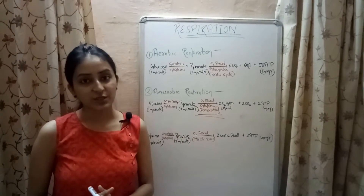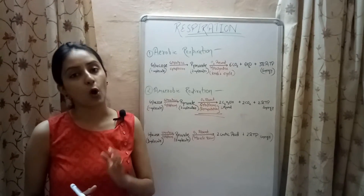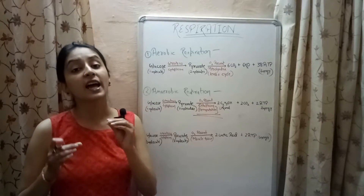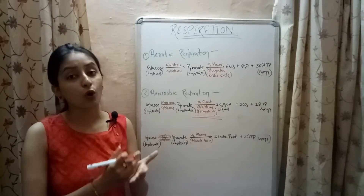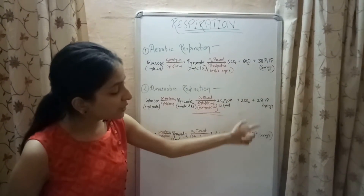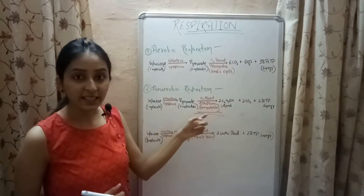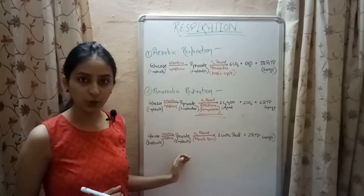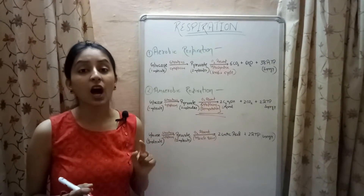To quickly differentiate: aerobic respiration involves breakdown of glucose in the presence of oxygen to release 38 molecules of ATP, whereas anaerobic respiration involves breakdown of food in the absence of oxygen and releases only two molecules of ATP along with ethanol and carbon dioxide in yeast by the process called fermentation, or lactic acid in human beings.